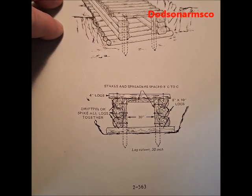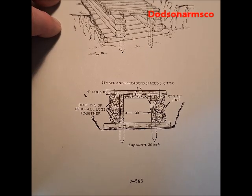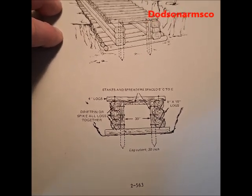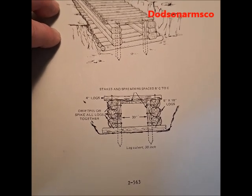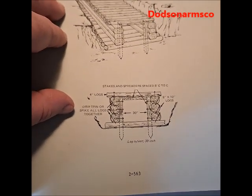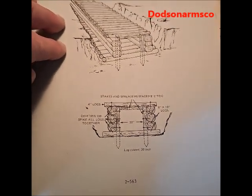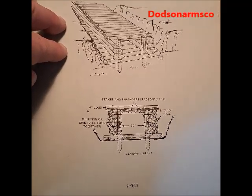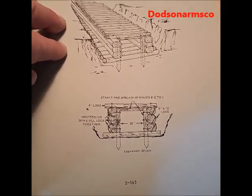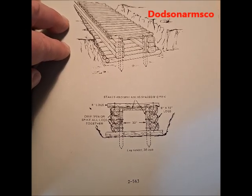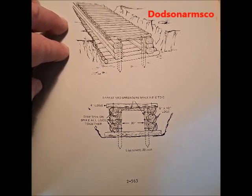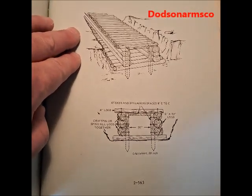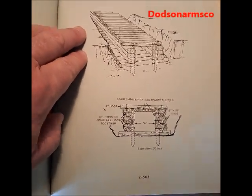Basically a drift pin is a large spike. Some of them are square and you drive them in a round hole and it holds better. If you don't have drift pins, you can use number five rebar which is five-eighths inch in diameter. Number four is also usable — it's a half-inch in diameter. You can buy rebar, cut it, and use it to spike this stuff together. That's probably the cheapest route rather than buying spikes.